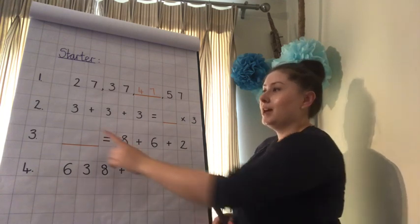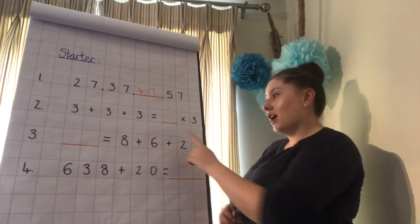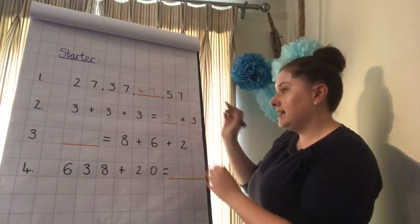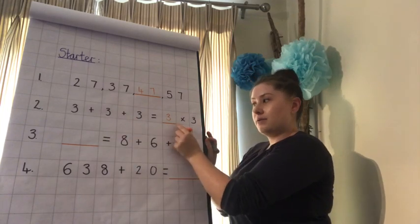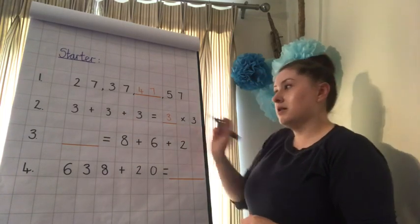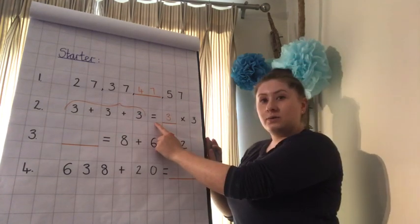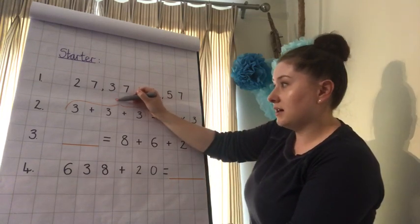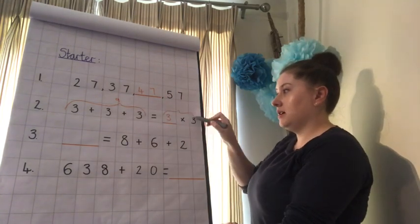Question 2: 3 add 3 add 3 equals 3 times 3. Well done. It is 3 groups of 3. These are all equal groups of 3. 3 groups of 3 equals 9. I also know that both sides balance to 9. Our equals means that it's the same on both sides. So if this side equals 9, this side also has to equal 9.